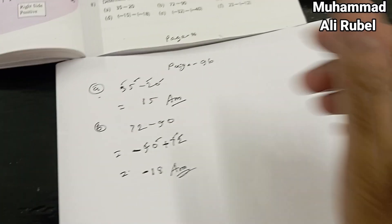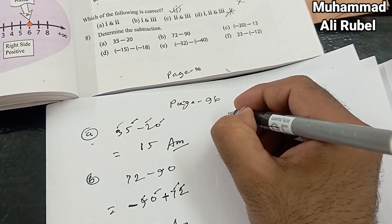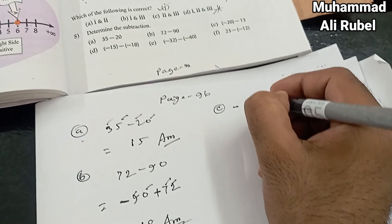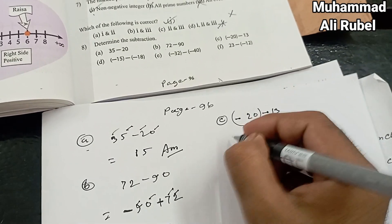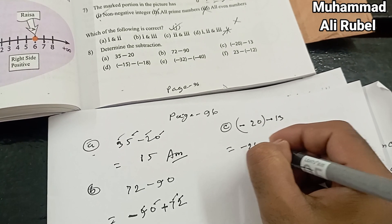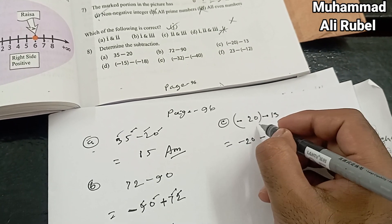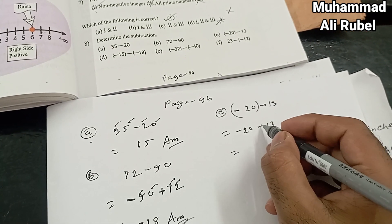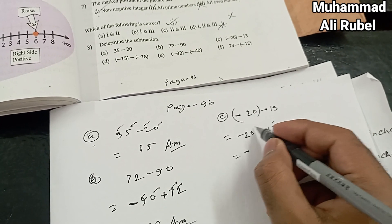Now we're gonna solve (c). Number (c) is minus 20 minus 30. Here, minus 20 minus 30, we solve the brackets first. We add it, although both numbers are minus, so that's why the answer is minus 50.